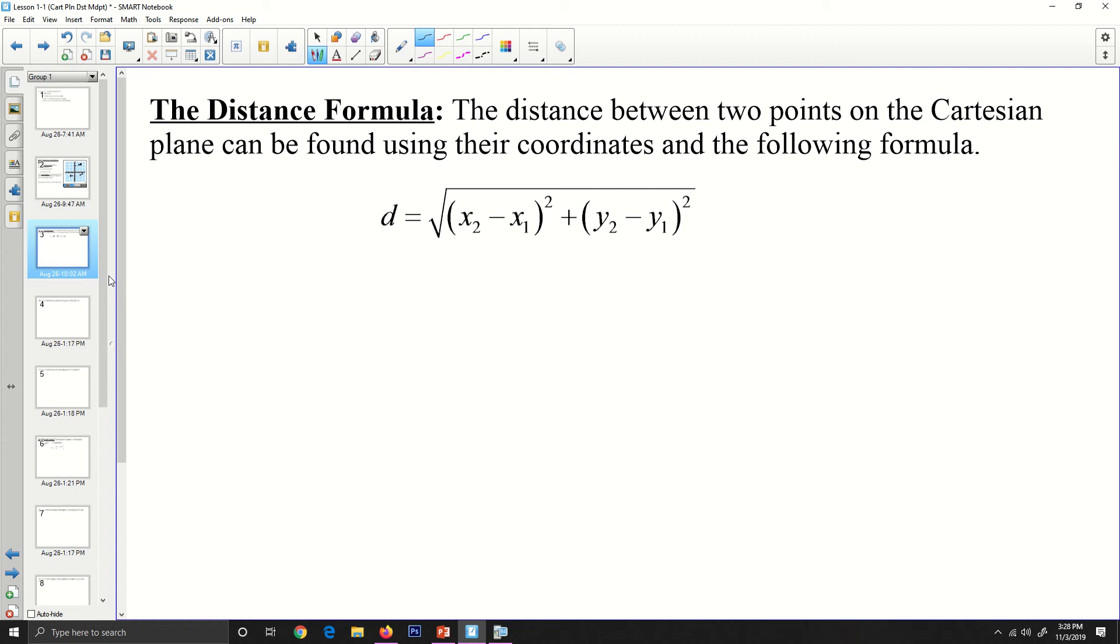The distance formula. The distance between two points on the Cartesian plane can be found using their coordinates and the following formula: d is equal to the square root of the difference between the x-coordinates squared plus the difference of the y-coordinates also squared.